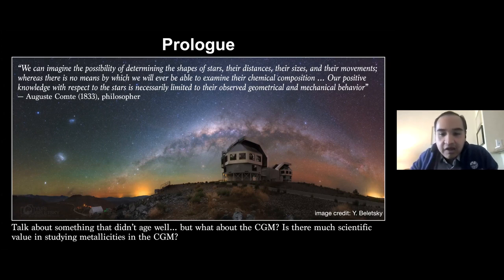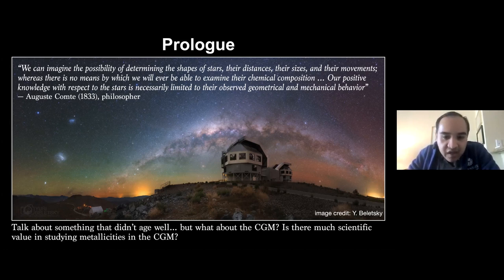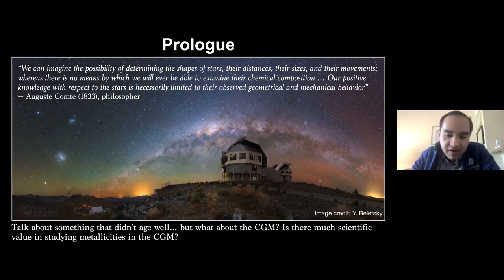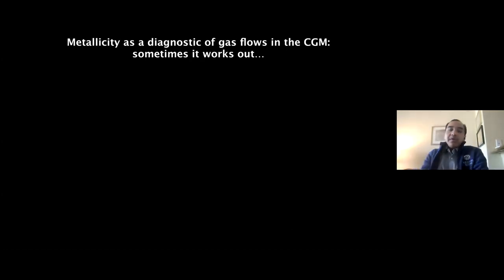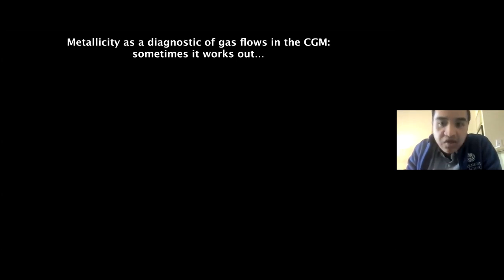But it does make me think a little bit — what about the CGM? Is there much scientific value in studying the metallicities of the gaseous halo? Can we actually use it to understand the physics of the CGM? It seems that this is still a matter of some debate, judging from a bunch of lively discussions that took place in Slack over the past couple of weeks and throughout the workshop. So really, the practical side of this question is whether gas metallicity is a good diagnostic of different processes occurring in the CGM.